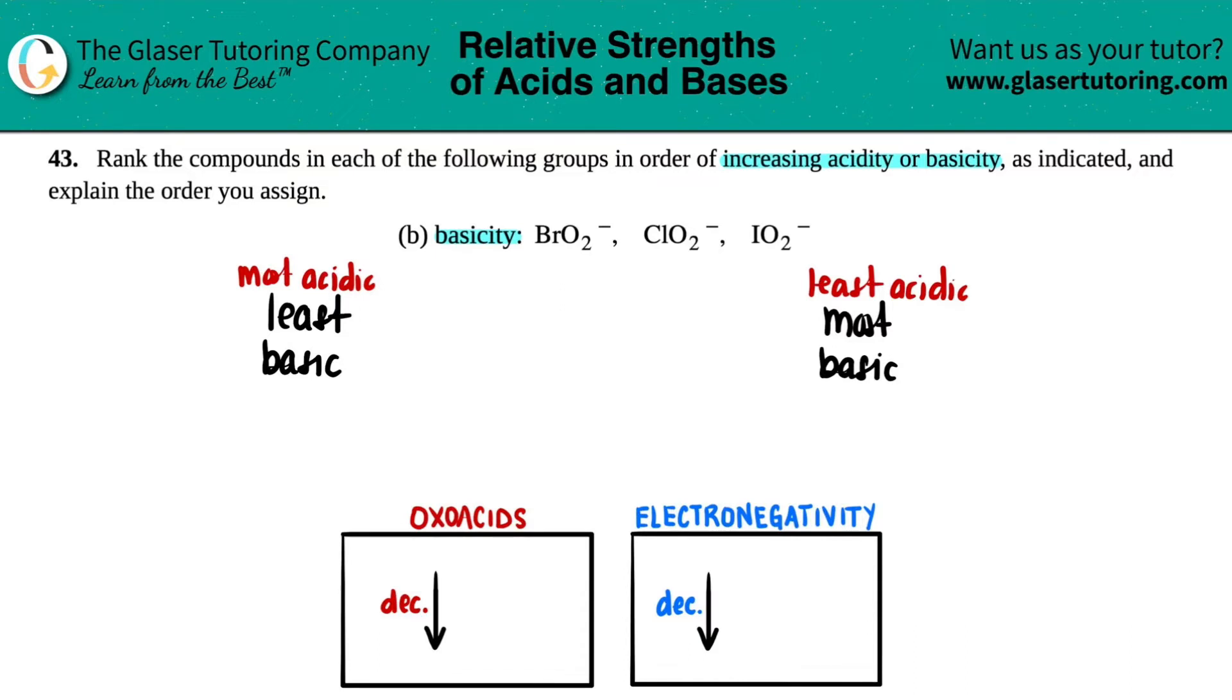Let's think of this in terms of acidity and rank it that way. How were these acids? There's no hydrogens here, but they all have negative charges, which means they came from a conjugate acid. The conjugate acids would be HBrO2, HClO2, and HIO2.